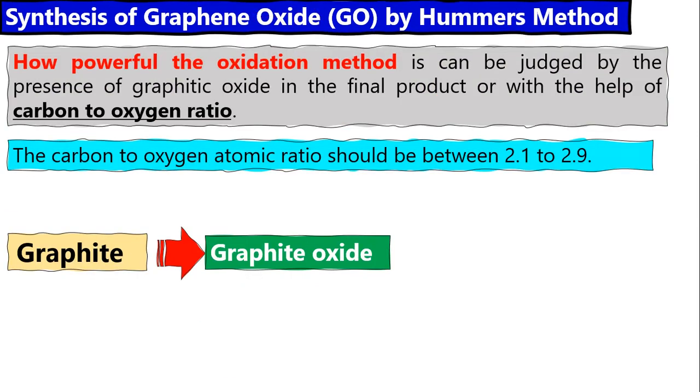How do we know we've oxidized the graphite into graphite oxide? If at the end we have a large amount of graphite oxide, the oxidation method is powerful. Secondly, if the carbon to oxygen atomic ratio is between 2.1 to 2.9, we can say that the method is powerful.